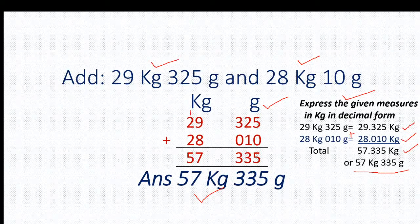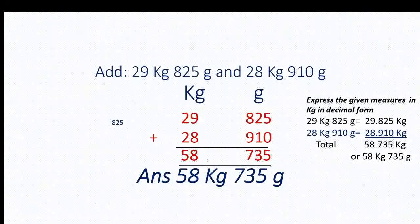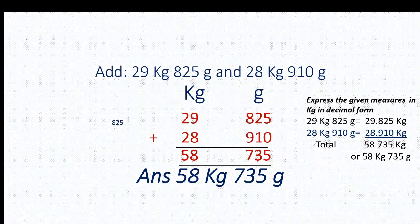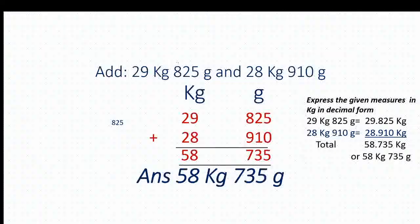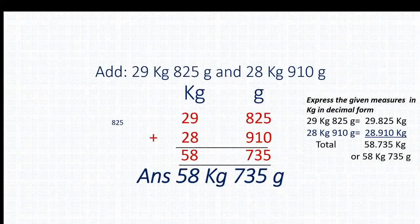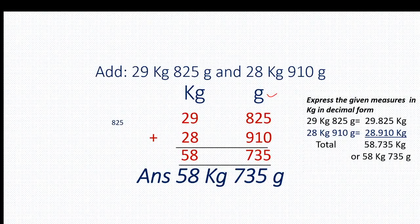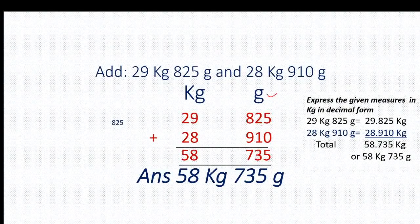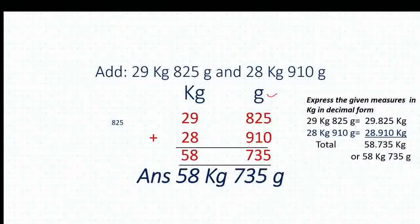Moving to the next page. Here our question is 29 kg 825 gram and 28 kg 910 gram. Our first step is to write the units and then arrange these numbers in the columns. After that we do addition: 5 plus 0 is 5, 2 plus 1 is 3, 8 plus 9 equals 17.